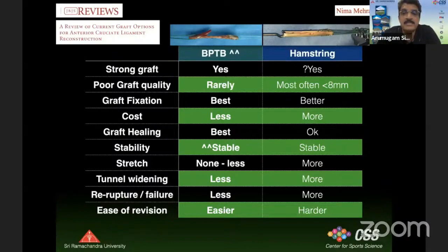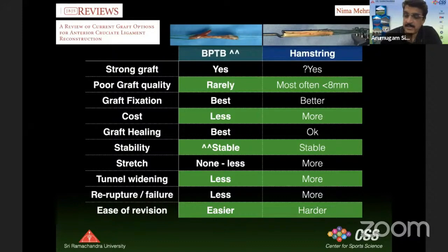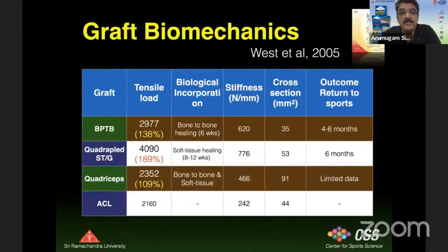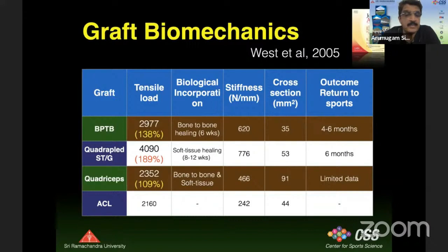Despite all these positives, the BTB graft lost its popularity but is now regaining it. Looking at the biomechanics and, more importantly, the outcome that we are most interested in — return to sports — only the BTB graft allows return to sports as early as four months, as studies have shown. No other graft can match that.